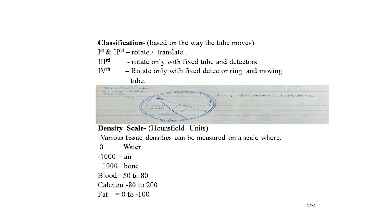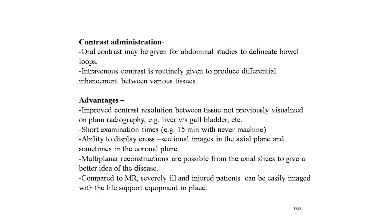CT scanner classifications based on how the tube moves: first and second generation — rotate and translate; third generation — rotate only with fixed tube and detectors; fourth generation — rotate only with fixed detector ring and moving tube. Here is an image showing the direction of x-ray tube motion and fan beam with the patient on the table and a ring of static detectors. On the Hounsfield density scale: 0 is water, minus 1000 is air, plus 1000 is bone, blood is 50–80, calcium is minus 80 to 200, and fat is 0 to minus 100.